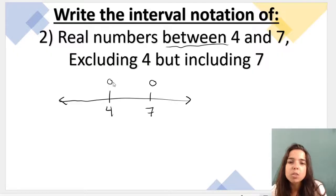Excluding 4. So our little circle over here is going to stay open because it excludes 4, but including 7. So I'm going to have to color in that dot because we're including 7.